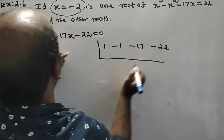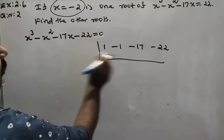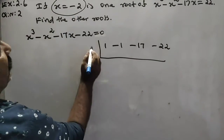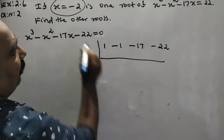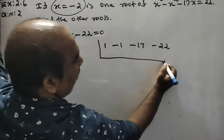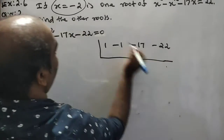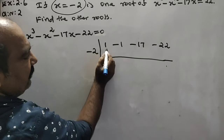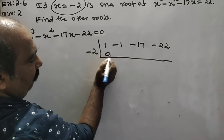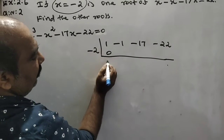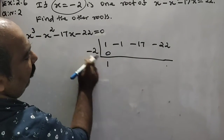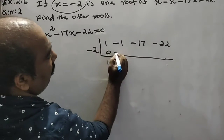We use x equals minus 2 as the root. If x is a root, the remainder is equal to 0. Starting synthetic division: bring down 1, multiply by minus 2 gives 0, then 1 plus 0 equals 1.